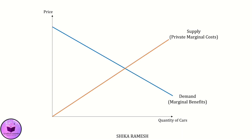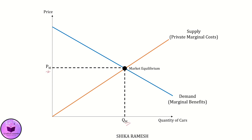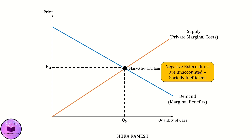The demand and supply curves for automobiles are shown here. The demand curve shows the marginal benefits of the consumer from consuming an additional automobile, and the supply curve represents the marginal cost of the firm for producing an additional automobile. The market is in equilibrium where the marginal cost and marginal benefit curves are equal, with the equilibrium quantity being Qm at an equilibrium price of Pm per unit. Here, the negative externalities of producing and consuming the automobile are not accounted for.